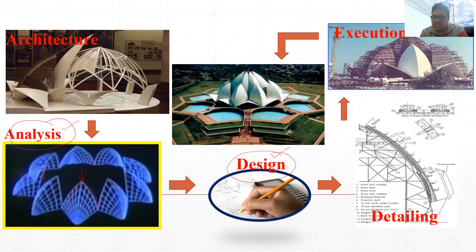Once the structure engineer has finished designing and sizing all the elements, the next stage is detailing. Detailing means converting all the design work into drawings. Those drawings are then sent to the construction site, where site engineers, site supervisors, and civil engineers execute the construction work based on those drawings.